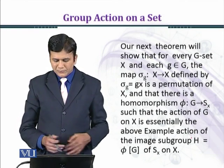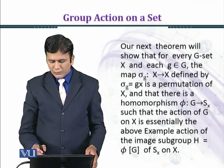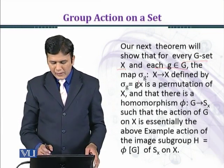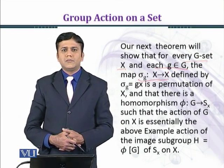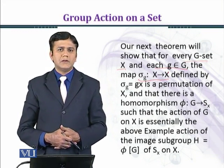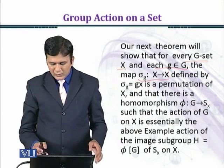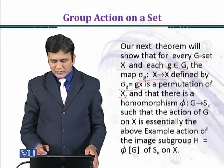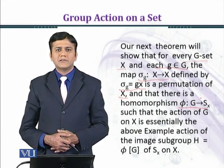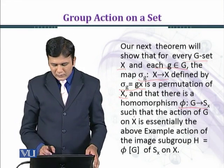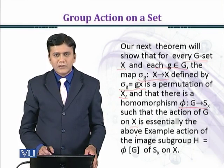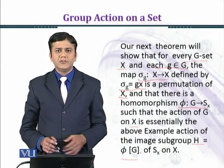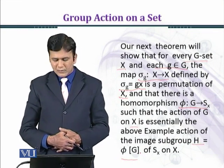We shall consider an interesting theorem and our theorem will show that for every G set X and each G belonging to capital G, the map sigma G X to X, sigma G, we have the map permutation because it is bijective from X onto X. Defined by sigma G equal to GX is a permutation of X and that there is a homomorphism phi from G to S_X, symmetric group of capital X, such that the action of G on X is essentially the above example action of the image subgroup H equal to phi G of S_X on X.